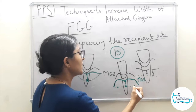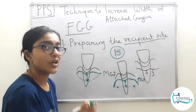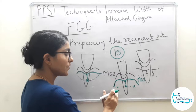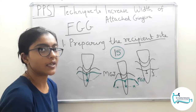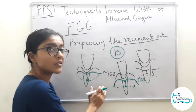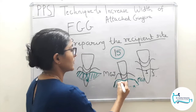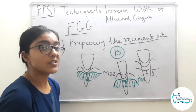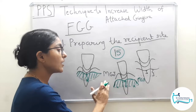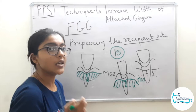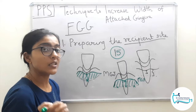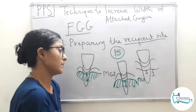Both methods — single horizontal incision or horizontal with two vertical releasing incisions — use partial-thickness flap reflections, keeping the periosteum intact. Full-thickness flap reflections exposing bone can also be done, but partial-thickness flaps heal faster and better and are the first choice and recommended option.